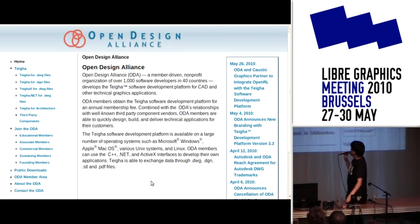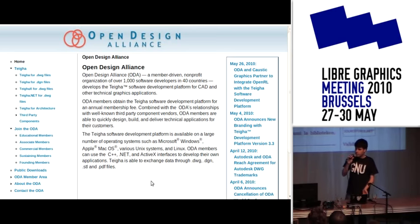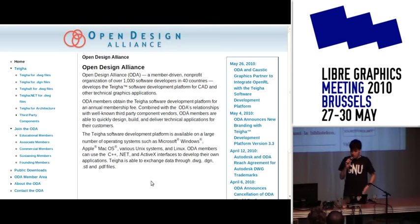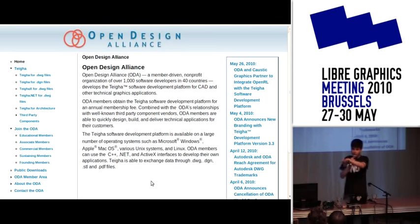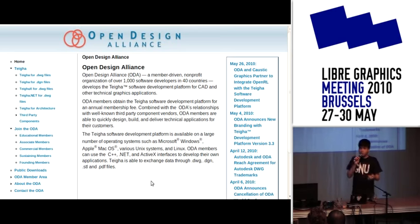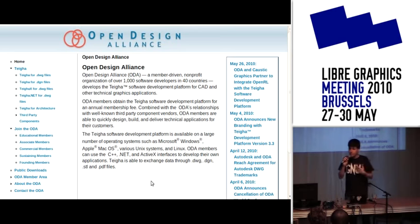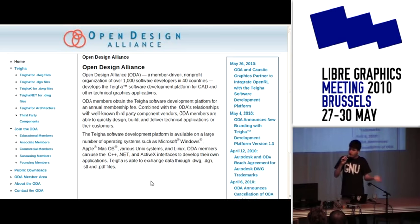We then found a free software library called LibDWG, which was working based on this specification to implement DWG support. The Open Design Alliance had also released a proprietary library. At the time it was free of charge, but nowadays it's neither free as in freedom nor free as in free beer.